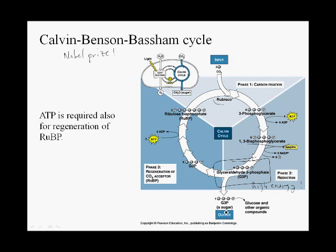Let's say one of these glyceraldehyde 3-phosphate molecules leaves the cycle. We are then left in the chloroplast with five molecules of glyceraldehyde 3-phosphate, which have 15 carbons total — five three-carbon sugars.